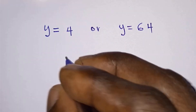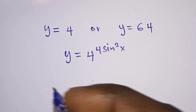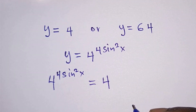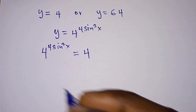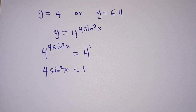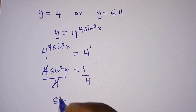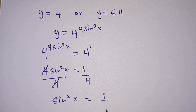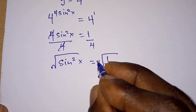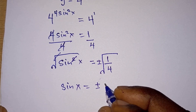Recall that y equals 4 to the power 4 sine squared x. When y equals 4, we have 4 to the power 4 sine squared x equals 4 to the power 1. Since the bases are the same, equating exponents gives 4 sine squared x equals 1. Dividing by 4 gives sine squared x equals 1/4, and taking the square root gives sine x equals plus or minus one half.